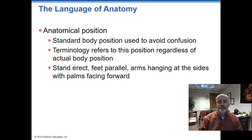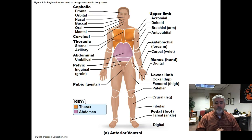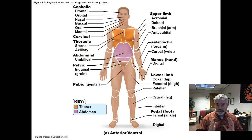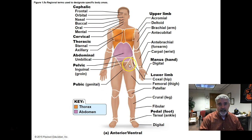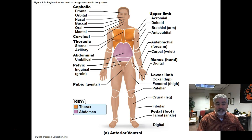Anatomical position is: palms forward, facing forward — that is considered anatomical position. We can look at and see all these regions and areas. When we say we're referencing something, we're always referencing it from this position. So regardless of the position that your patient is in, you're going to have to reference it with this positioning in mind.